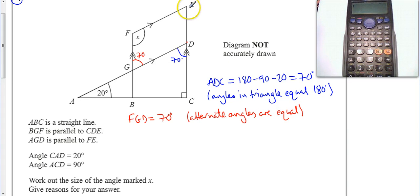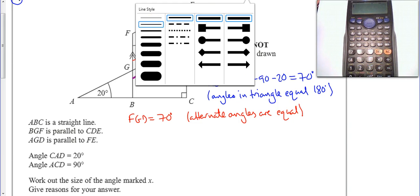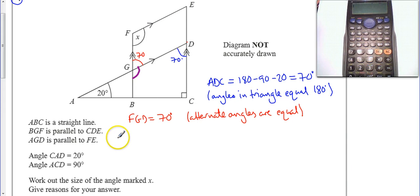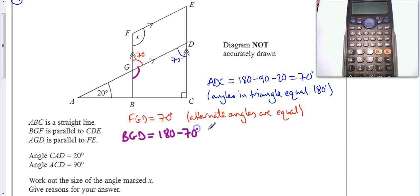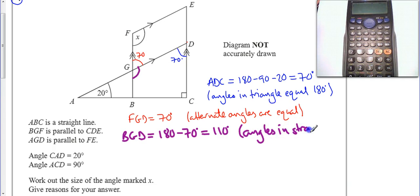Let's pick a different colour. I'm going to work out angle BGD. BGD is equal to 180 minus 70, which is 110 degrees. The reason for that is angles on a straight line equal 180 degrees.